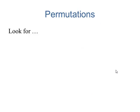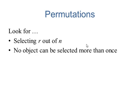To identify a permutation problem, the things that we're looking for, selecting R out of N. Again, this many out of that many. We have to be sure that no object can be selected more than once.